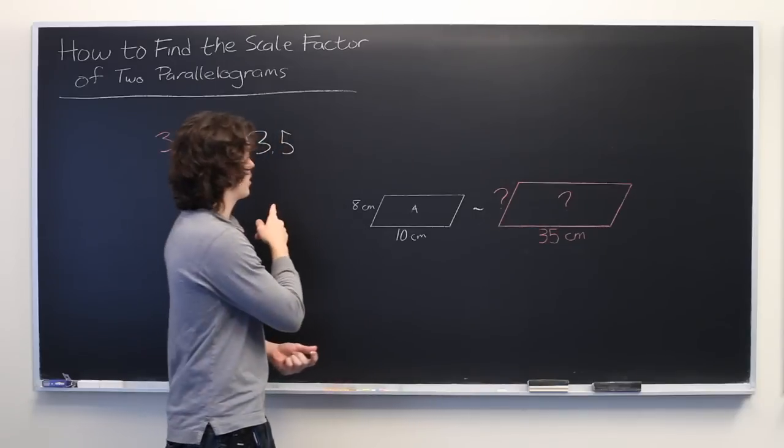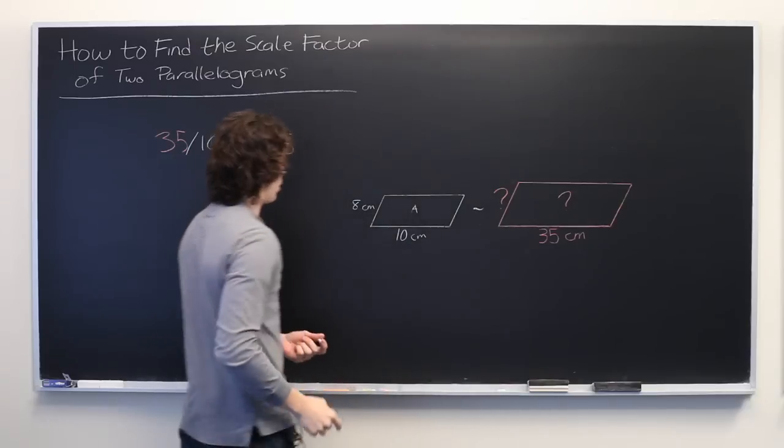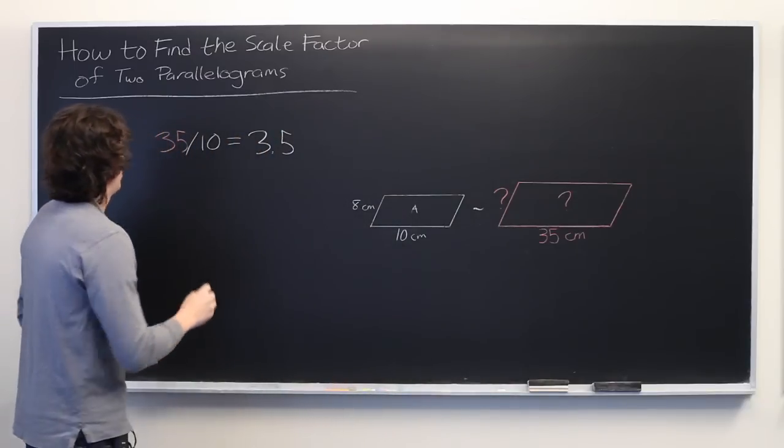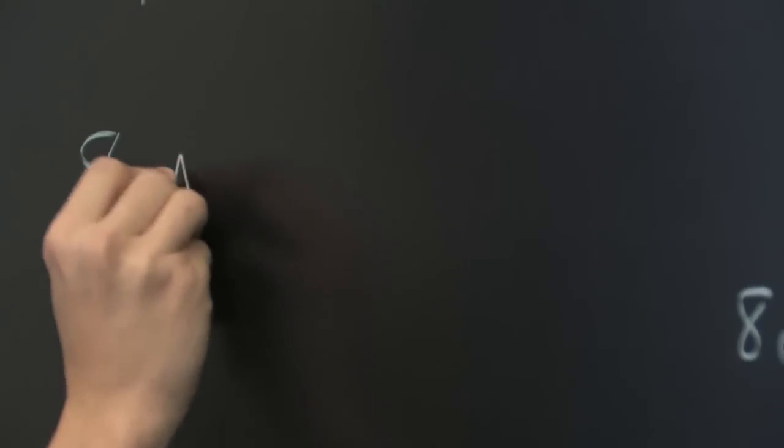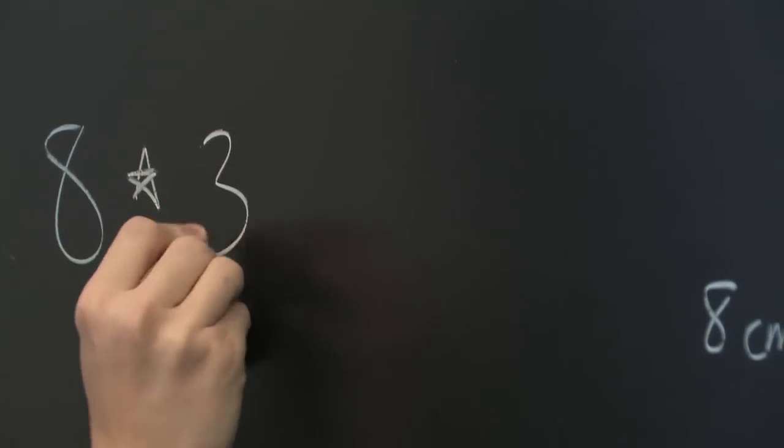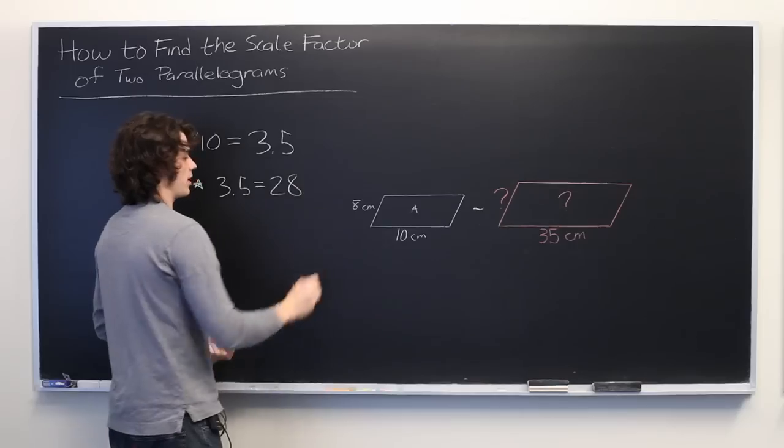So we can take that scale factor and then apply it to this side over here. Solve for this unknown quantity. So we get 8 times 3.5, which gives us 28.